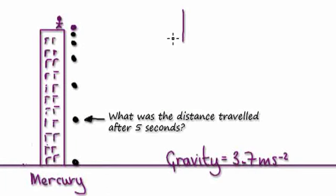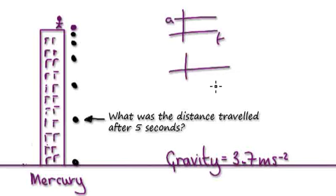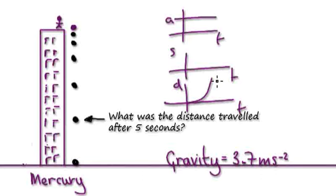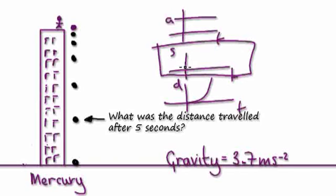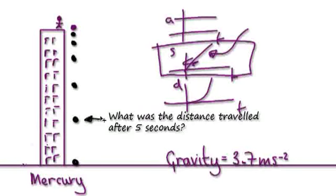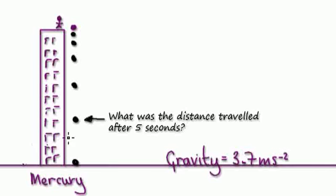Maybe sketch your acceleration-time graph, then sketch the speed-time graph, and then sketch the distance-time graph. The distance-time graph happens to be this, but really the important one is the speed-time graph. You can just work out the area underneath the graph. Come up with an equation for this line, and then from that equation you can work out the distance traveled. Press pause and have a go.